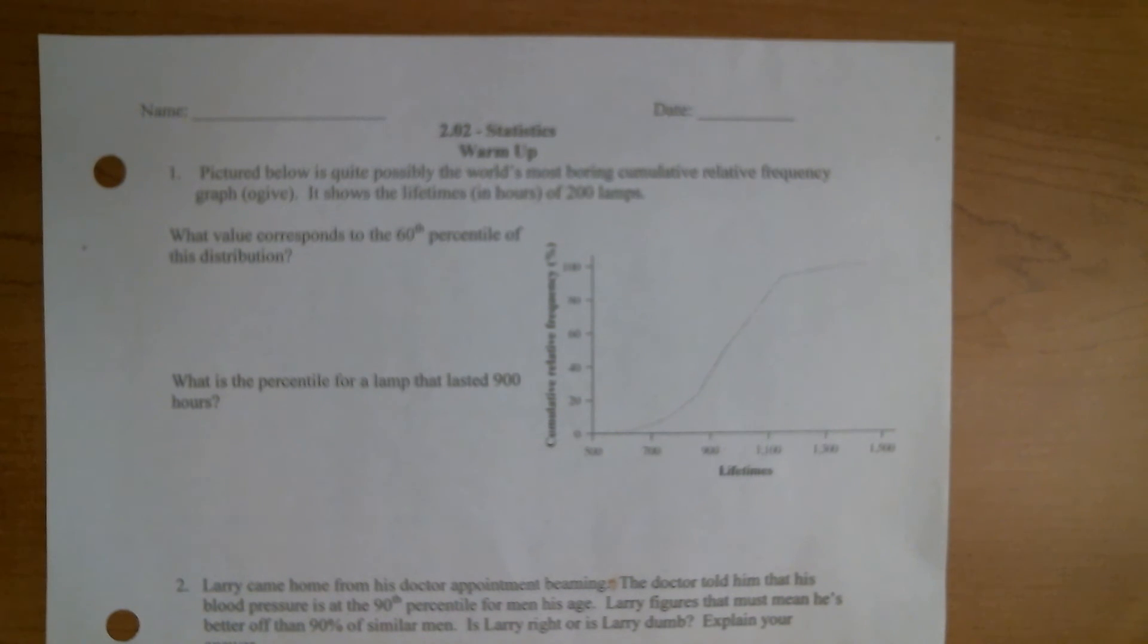Hello and welcome to your stats warm up. So what do we have here? Pictured below is quite possibly the world's most boring cumulative relative frequency graph. It shows the lifetime in hours of 200 lamps. So remember the cumulative relative frequency graph is a way of visually representing percentiles, so we can use this to find percentiles and figure out what values correspond to specific percentiles.